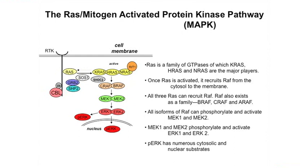Now diving a little deeper: RAS itself is a small GTPase, and KRAS, HRAS, and NRAS are the major players. Once RAS is activated, it recruits its downstream partner RAF — from the cytosol to the membrane. RAF also exists as a family: BRAF, CRAF, and ARAF. The RAFs can phosphorylate MEK1 and MEK2 — this is the bucket brigade just downstream from RAS. MEK1 and MEK2 then activate ERK1 and ERK2. The more complex a pathway, the more ways you can disrupt it.